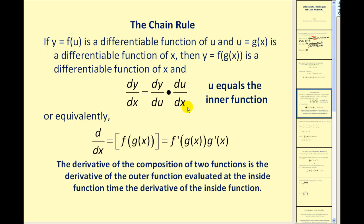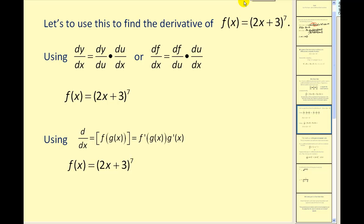Now there are a couple of ways to write the chain rule. This notation means the exact same thing as the one above, just written differently. G of x is our inner function and f is our outer function. Essentially we're taking the derivative of the outer function evaluated at the inner function, times the derivative of the inner function — in both cases. So let's apply this to f of x equals the quantity 2x plus 3 raised to the seventh power. We'll do this both ways — our answers will be the same.